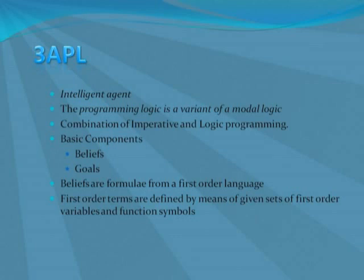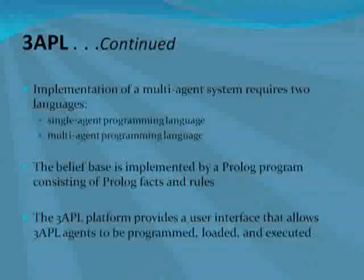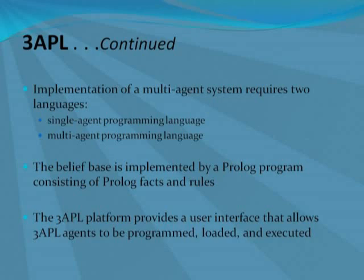The basic components of 3APL are beliefs and goals. Beliefs are formulas from a first-order language. First-order terms are defined by means of given sets of first-order variables and function symbols. In general, the implementation of a multi-agent system requires two programming languages: one single-agent programming language to implement individual agents, and one multi-agent programming language to implement multiple agent aspects such as which and how individual agents should be executed.